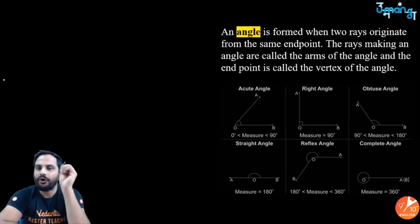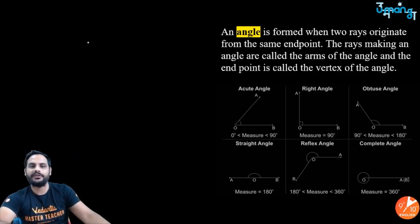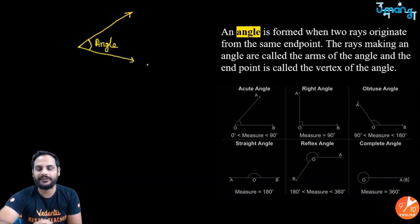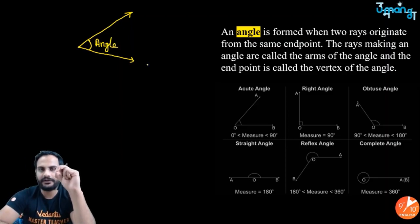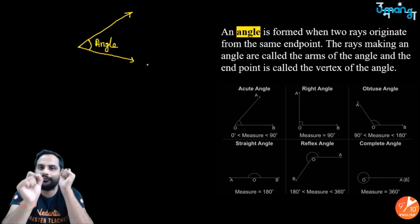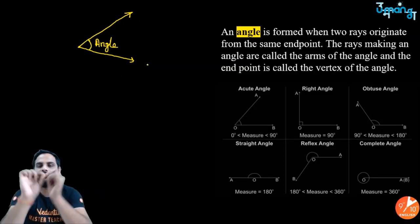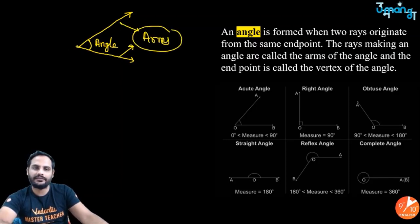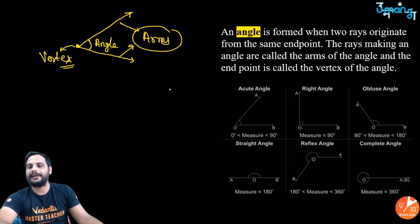Now, what is an angle? An angle is formed by two rays originating from the same endpoint. Suppose from one fixed point we originate two rays — the angle between them is formed. The rays making an angle are called the arms, and the fixed point is called the vertex.